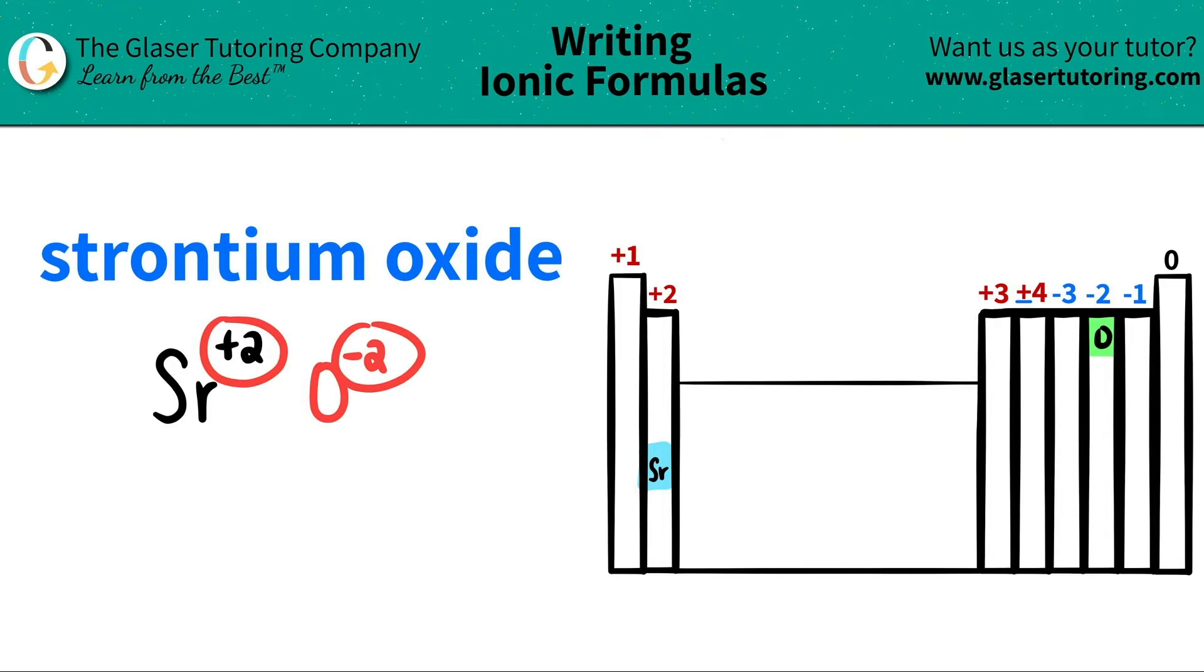Now since I have both components and I have the charges, I'm going to criss-cross them to see how many of each I need. This plus 2 criss-crosses down telling me that I need 2 oxygens. And this negative 2 criss-crosses down telling me that I need 2 strontiums.